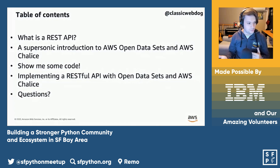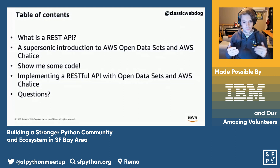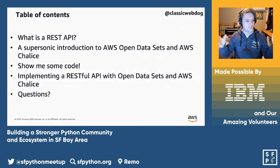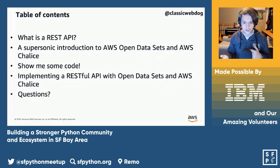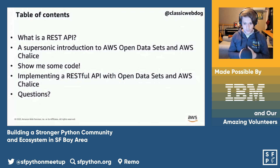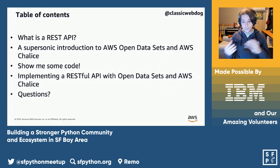Some of us may be super familiar with it and have tons of experience, and some of us — like I have done in the past — kind of just come into a technology and try to pick it up really quickly. So hopefully I can give you the 30,000-foot overview, and then we'll dive right into how you would do this with AWS and our tooling. We'll give you a supersonic introduction to AWS Open Data Sets and AWS Chalice, then dig into the code, and show how we'll implement that RESTful API with those two services.